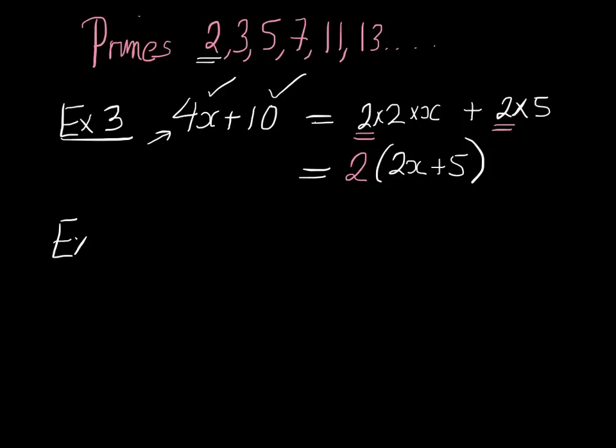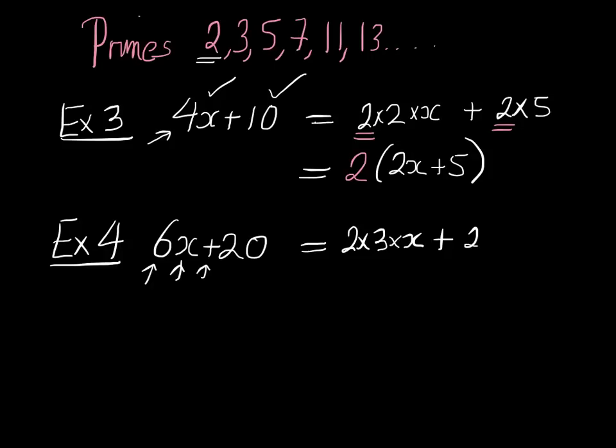Example 4. Imagine we were factorising 6x plus 20. Same thing. 6 isn't prime, it's not on our list, so let's break up 6 first. What primes multiply to 6? Well, 2 multiplied by 3, then multiplied by x, and then plus. Now what primes multiply to 20? 2 certainly goes into it, and then another 2 times 5. So now, what are we going to factorise out? There's a common 2 there and a common 2 there. So that's what we're going to factorise out. Take out a factor of 2, and in the brackets we'll have 3 multiplied by x, which we write as 3x, and we have 2 multiplied by 5 left, which is 10.